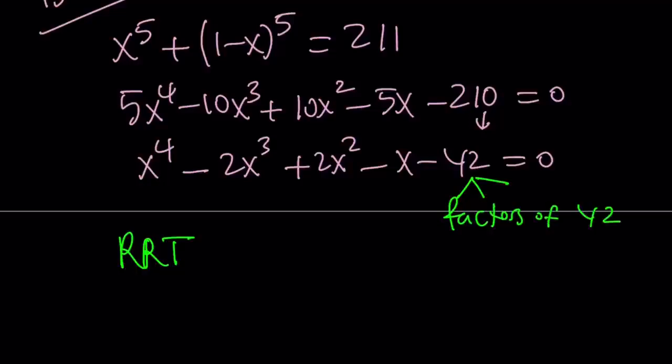And 42 has quite a few factors like plus minus 1, plus minus 2, plus minus 3, plus minus 6, plus minus 7, plus minus 14, plus minus 21, and plus minus 42.